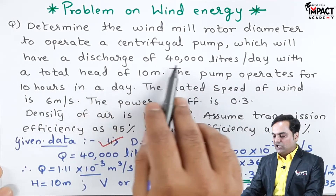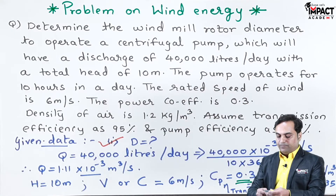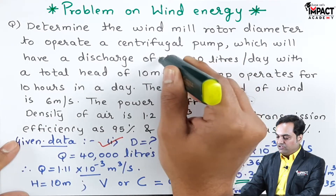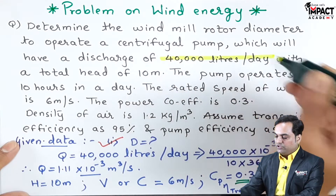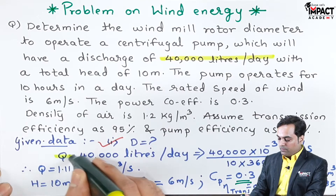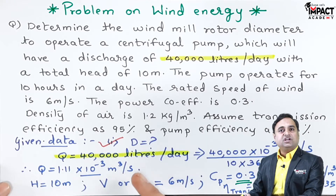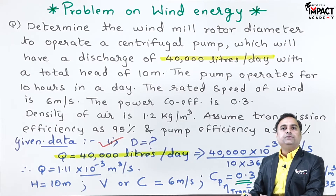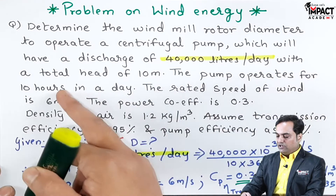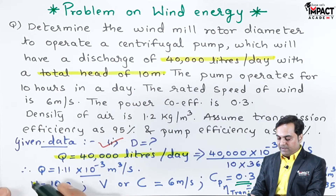The centrifugal pump will have a discharge of 40,000 liters per day, denoted by capital Q. This discharge needs to be converted into meter cube per second. The total head is 10 meters, denoted by capital H.